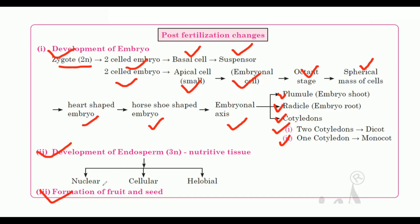Development of the endosperm: the second male gamete fuses with the secondary nucleus, resulting in the formation of the endosperm. Types are nuclear type, cellular type and helobial type. This is followed by formation of the fruit and seeds.